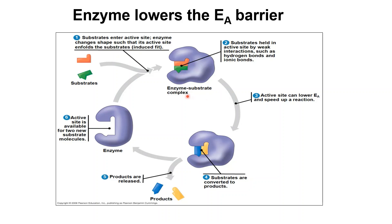After the binding, the enzyme-substrate complex is formed. The enzyme will speed up the chemical reaction by lowering the activation energy, which is the energy needed to change the substrates into products. The substrates reach the transition state, where they are least stable, and the old bonds between the molecules of the substrates are broken down.